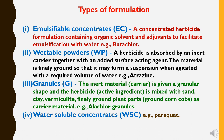The types of formulations are as follows. First, emulsifiable concentrates (EC) — a concentrated herbicide formulation containing organic solvent and adjuvants to facilitate emulsification with water. Example: butachlor. Second, wettable powders (WP) — a herbicide absorbed by an inert carrier together with an added surface active agent, finely ground so it forms a suspension when agitated with water. Example: atrazine. Third, granules — the inert carrier material is given a granular shape and the active ingredient is mixed with sand, clay, vermiculite, or finely ground plant parts (ground corn cobs) as carrier material. Example: alachlor granules. Fourth, water-soluble concentrates (WSC). Example: paraquat.